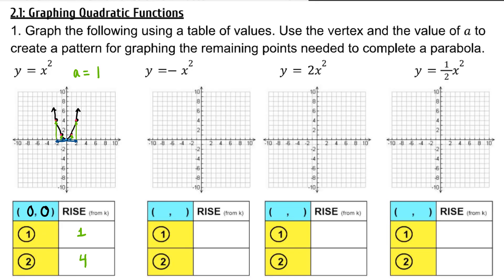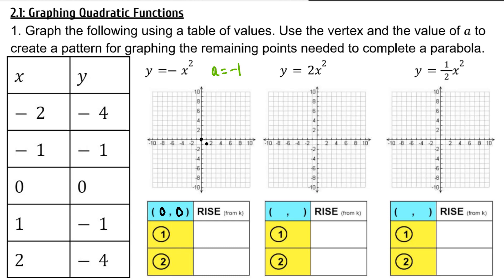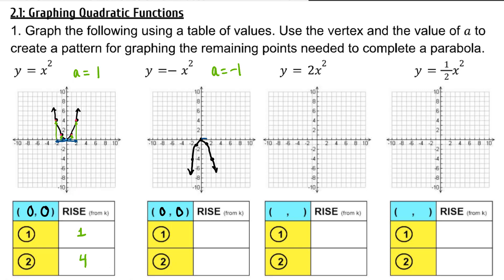I could plug in a table of values, or I could recognize that this is just a reflection over the x-axis, because a is negative 1. So I'm going to take all the points from the parent graph and reflect them over the x-axis. The vertex remains at (0, 0). Moving one unit away from the vertex, the change in y is now down one unit. When you move two units to the left or right from the vertex, the change in y is down four.